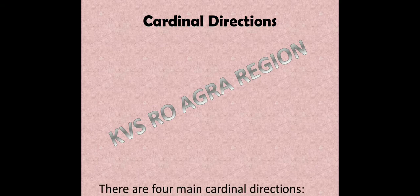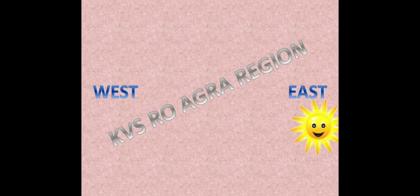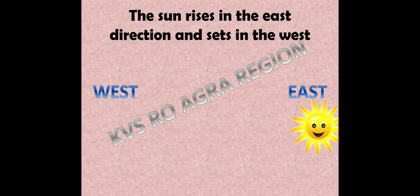In order to understand maps, we must first understand the cardinal directions. There are four main cardinal directions: North, South, East, and West. Children, you all know that the sun rises in the East. Yes, the sun rises in the east direction and sets in the West.